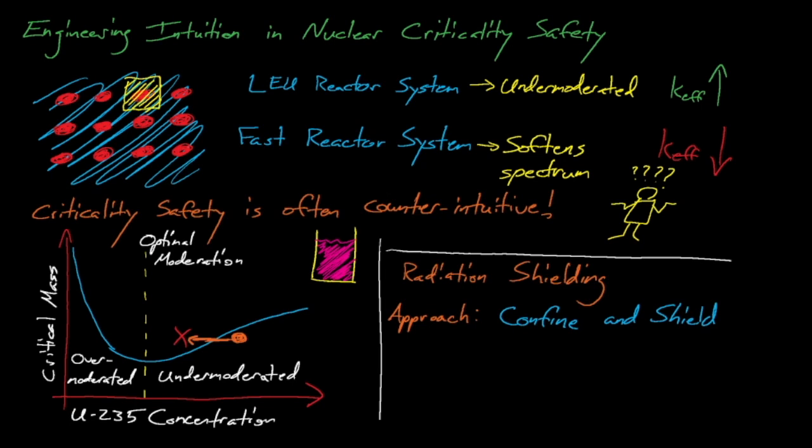However, in criticality safety, these well-intentioned actions can have the opposite effect and make the system less safe. Collecting and concentrating the system will decrease its neutron leakage, which will thus increase its eigenvalue, and adding shielding around the system will simply provide reflection for neutrons that are leaking, which will also increase its eigenvalue.